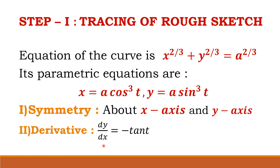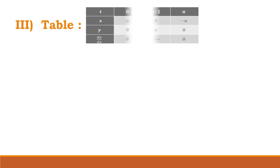Next, we obtain the derivative dy/dx, which is minus tan t. Next, we construct a table of values for the variables t, x, y, and dy/dx. Depending upon symmetry about the x-axis, we consider values for t as 0, π/2, and π, and obtain the corresponding values for x, y, and dy/dx.